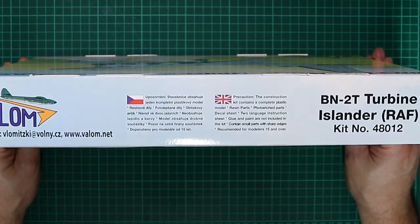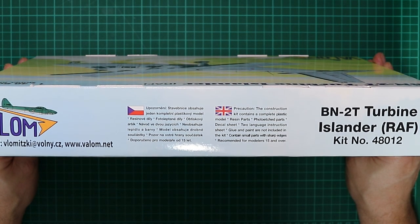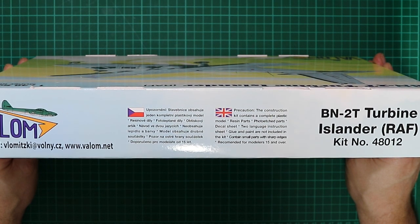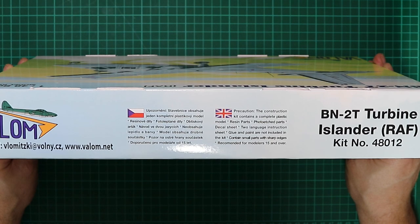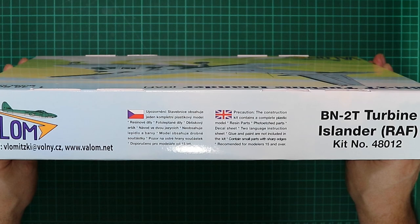It's recommended for modelers 15 and over. Kit number for this one is 48012. Box end is quite a simple affair: Valom logo, title, and a repetition of the box art.